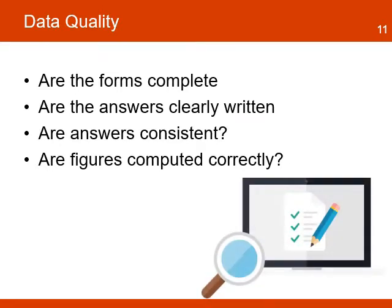Data needs to be checked for quality during and after the collection. Here are some of the errors to check that the project manager and the M&E officer should incorporate in the quality process: Are the forms complete? Are the answers clearly written? Are answers consistent? Are figures computed correctly? Many errors occur when people in charge of collecting the data don't have proper training and enter data incorrectly, resulting in reports that show inconsistency or even contradictory information.